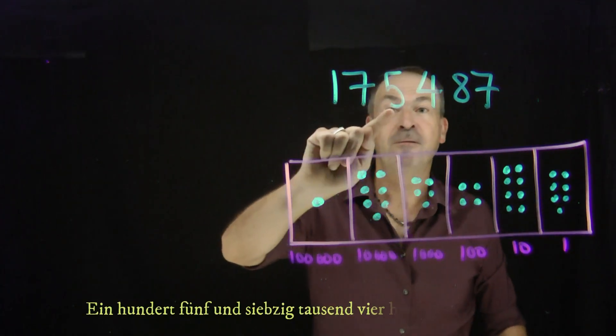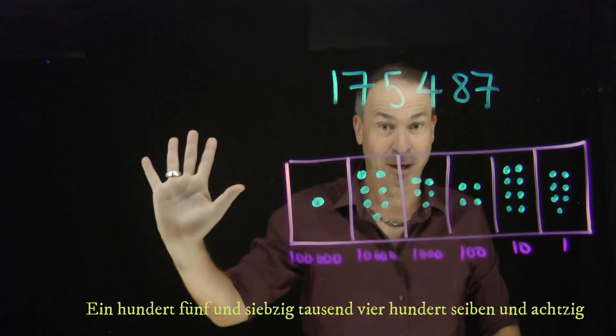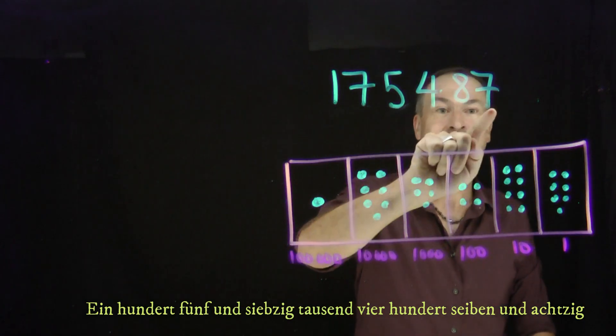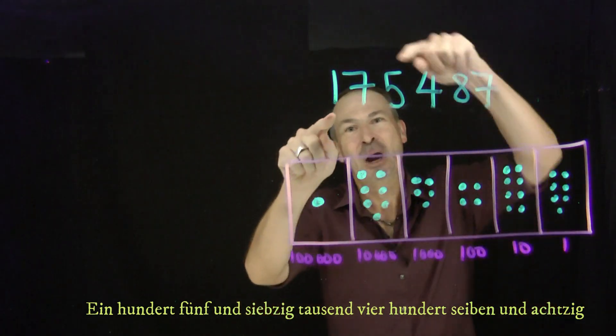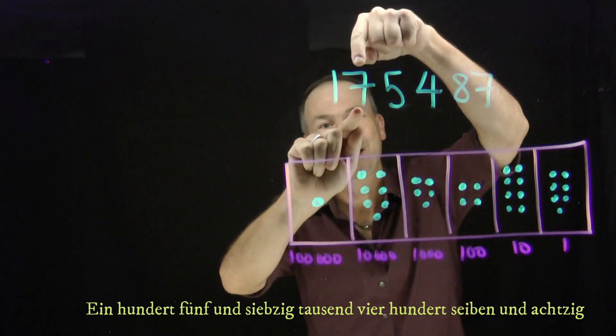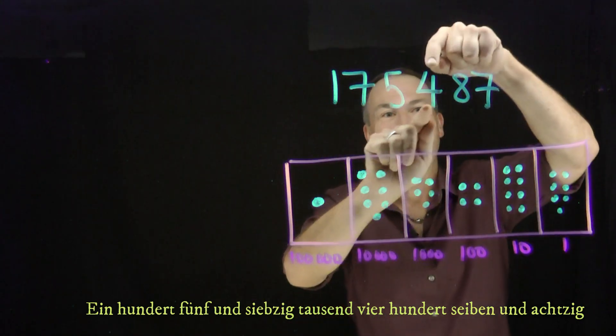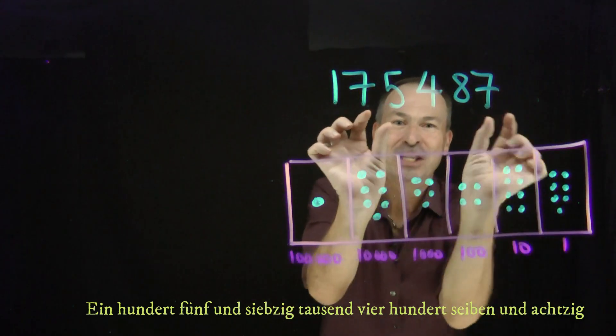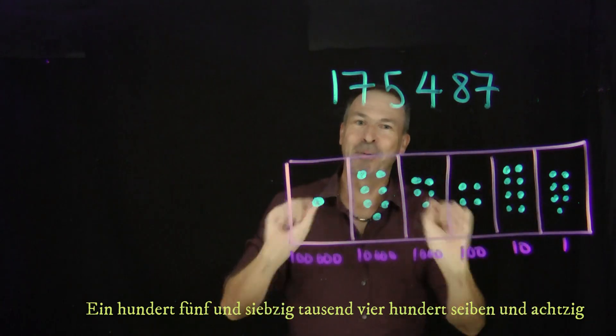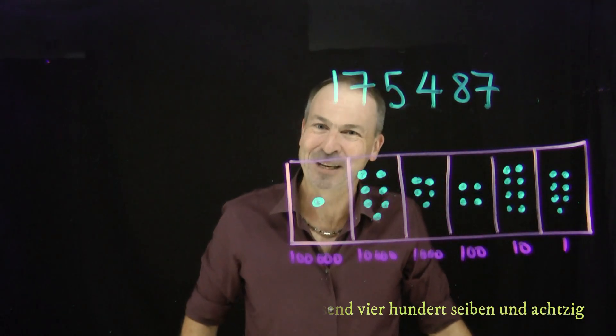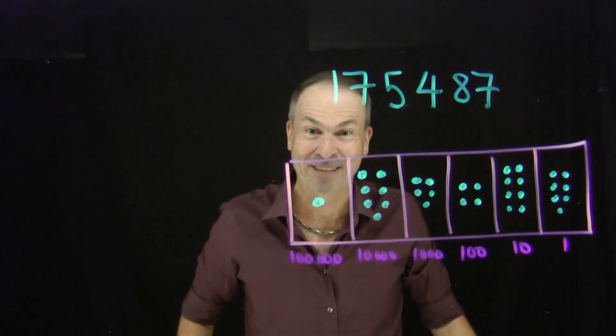175,487. As you notice, 105, 70,000, 407, 80. They switch the units and the tens, how they pronounce those particular digits. Very curious. Do you do some variation like that in your language?